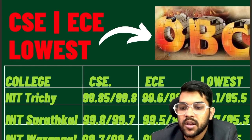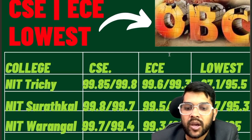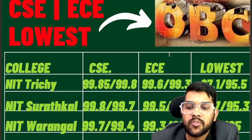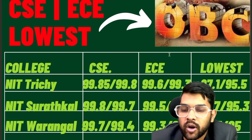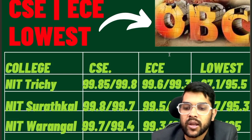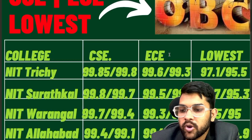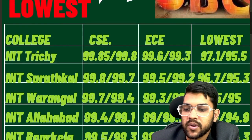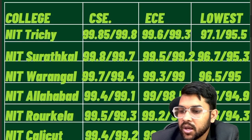Lowest means the lowest possible branch — the least in-demand branch in that college. For NIT Surathkal: 99.8, 99.5, 96.7 — these are for CSE, EC, and lowest branch for male students; after the slash you can check female cutoffs. These are for other state students. If you are from the home state of NIT Trichy, Surathkal, or Warangal you can expect a little more relaxation at a lower percentile. For Warangal: 99.7, 99.3, 96.5. For Allahabad: 99.4, 99.0, 95.3.